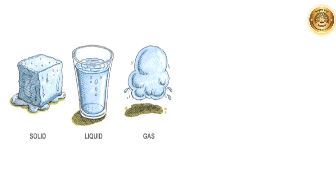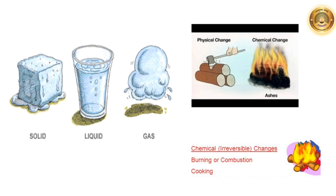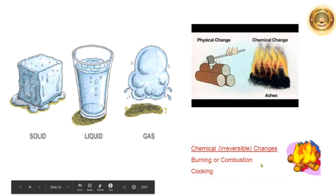When ice turns into water, no new substance is formed. The composition of ice and water are the same — there is only a change in the state of matter, that is it has changed from solid to liquid state. Whereas, when wood burns and forms ash, wood undergoes a complete change. In this change, a new substance is formed. The properties of wood and ash are different: wood is hard, but ash can be powdered easily. We cannot get back the wood from the ash. That is, chemical changes are mostly irreversible changes.